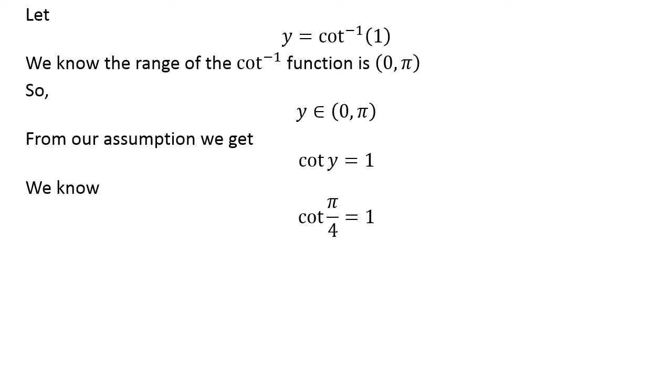We know cotangent of pi upon 4 is equal to 1. As pi upon 4 lies in the open interval of 0 and pi, so pi upon 4 is the principal value of inverse of cotangent of 1.